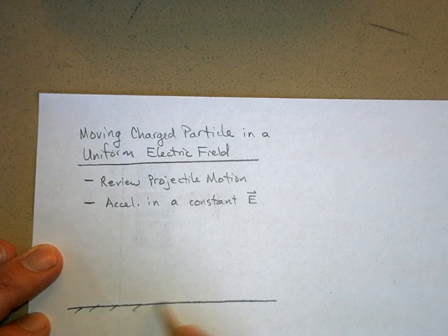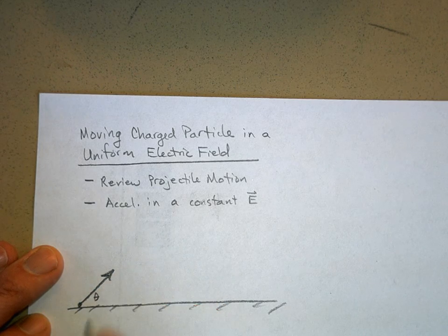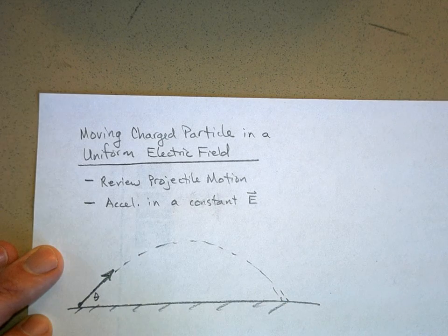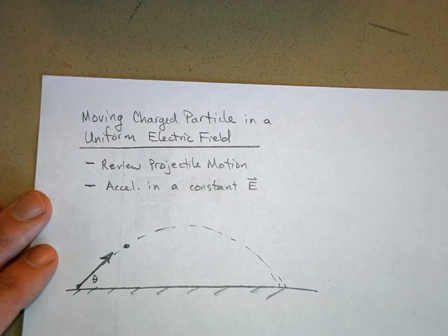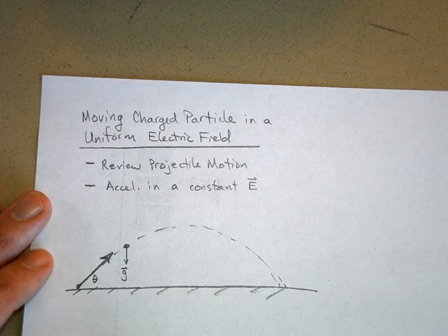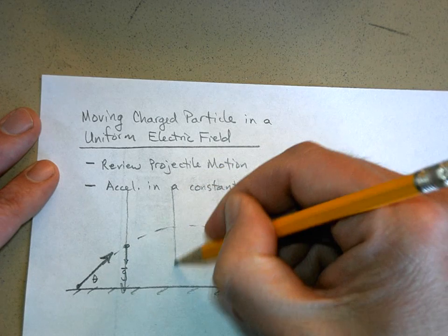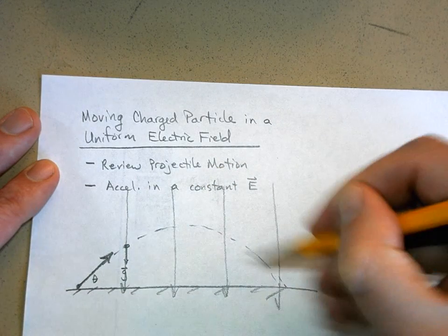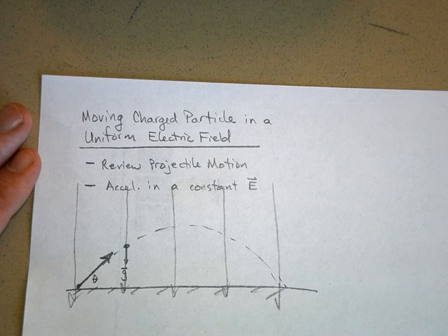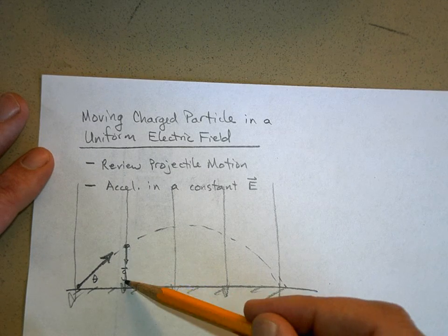With projectile motion, here's the ground - let's say we kicked a football at a certain angle theta and it made this nice parabola shape. If we look at the object at any given time, the only force acting on it was the force of gravity. We also talked about gravity as a gravitational field, with gravitational field lines pointing down. Close to the earth's surface, the gravitational field is uniform.